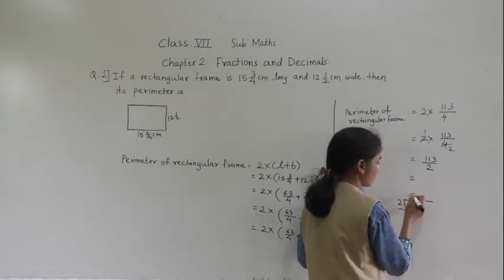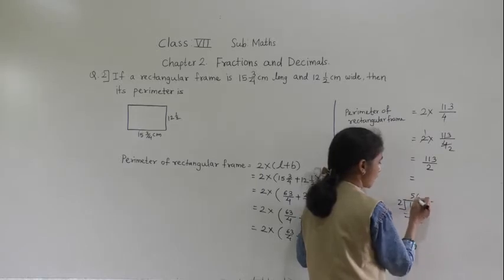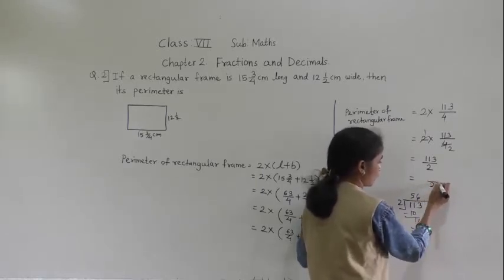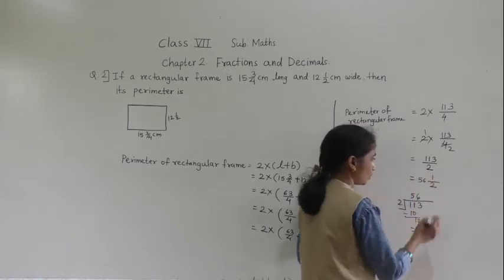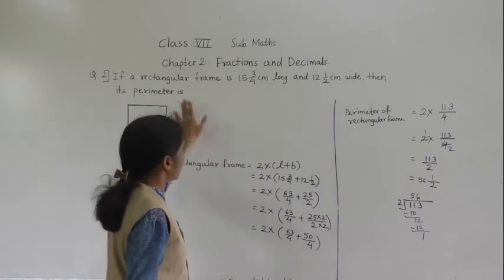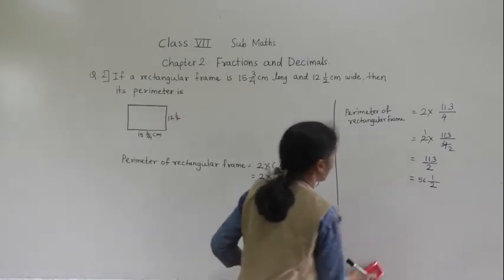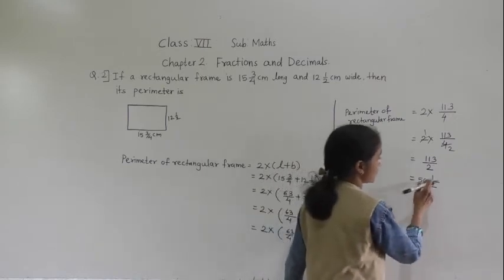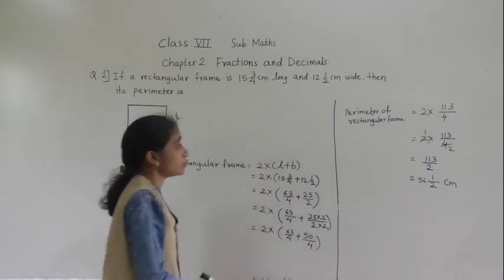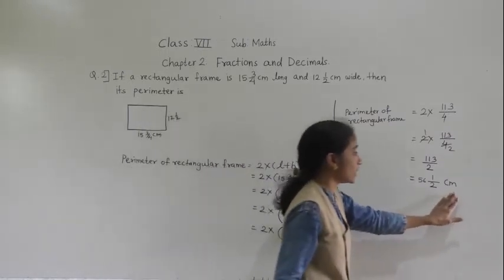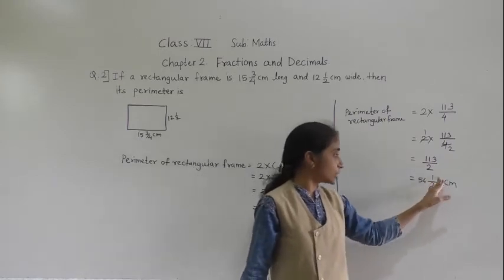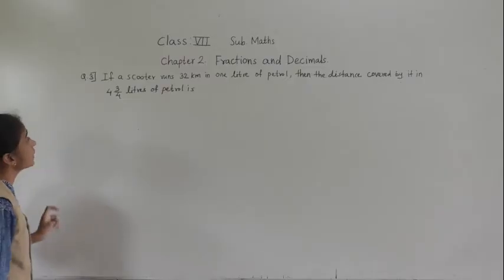Divide: 2 goes into 113 — 56 times with remainder 1. So we get 56 integer 1 upon 2. Perimeter of the rectangular frame is 56 integer 1 upon 2 centimeter.